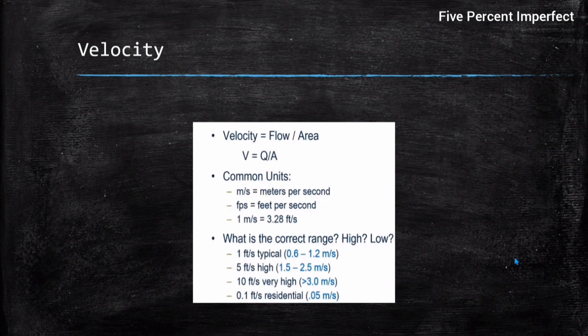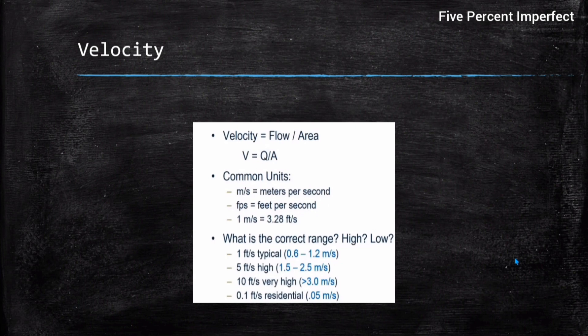Therefore velocity needs to be in a certain range, defined in meters per second or feet per second. In typical practice, the range followed is 0.6 to 1.2 meters per second, and in any case it should not go beyond 2.5 to 3 meters per second. For India-specific velocity guidelines, refer to the CPHEEO manual covered in the next lecture.